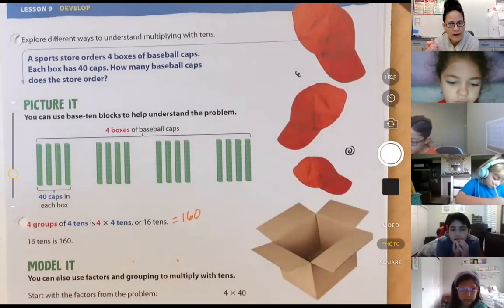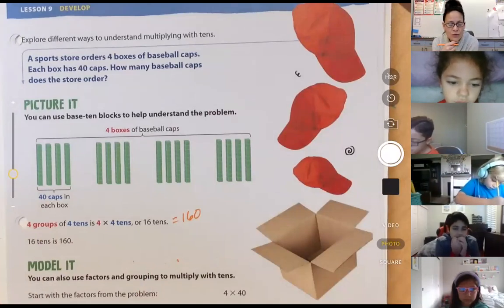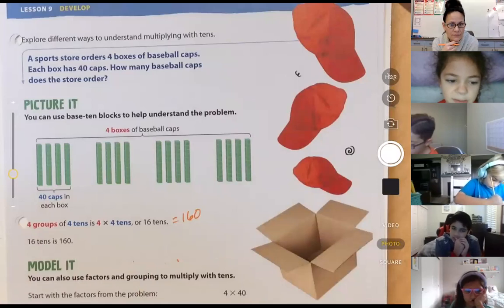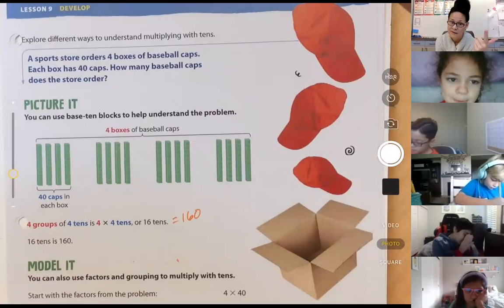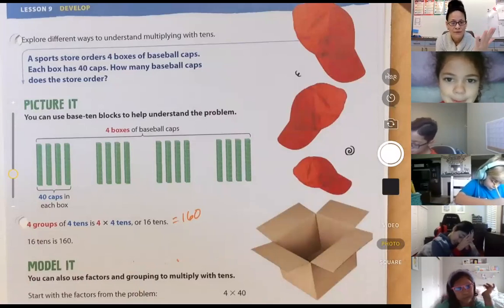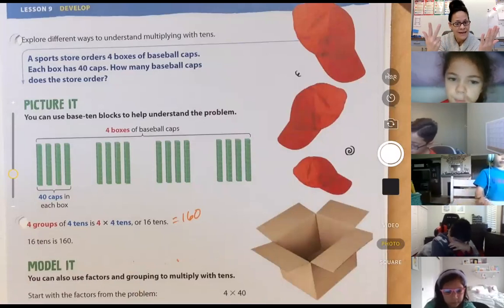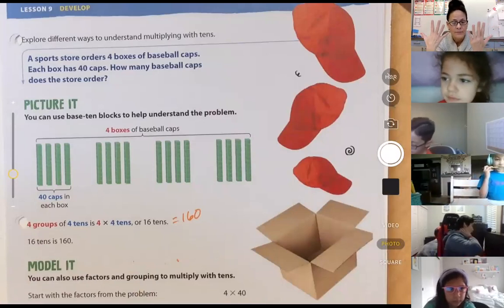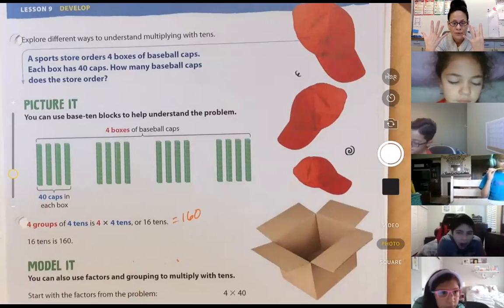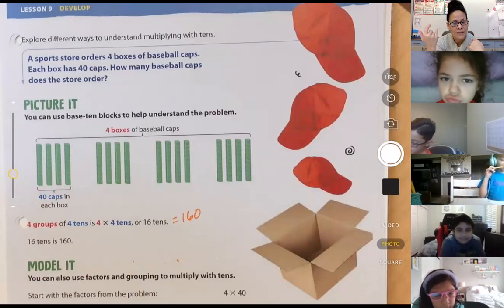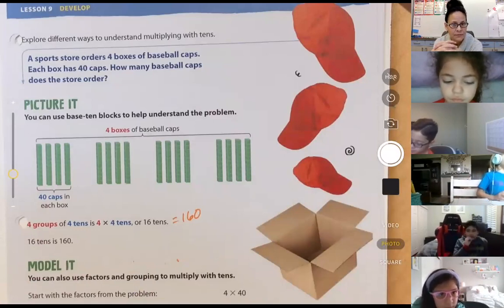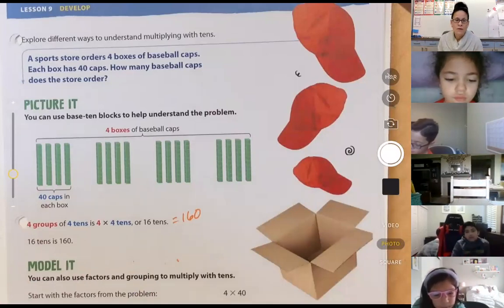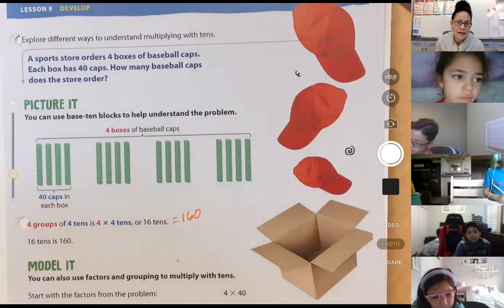How do I know that? Because if I want to forward count or skip count up to 16 tens, I start with my first 10, right? 10, 20, 30, 40, 50, 60, 70, 80, 90, 100, 110, 120, 130, 140, 150, 160. I simply forward counted by 10, 16 times. So many different ways, friends, so many different ways that we could picture this and model this.